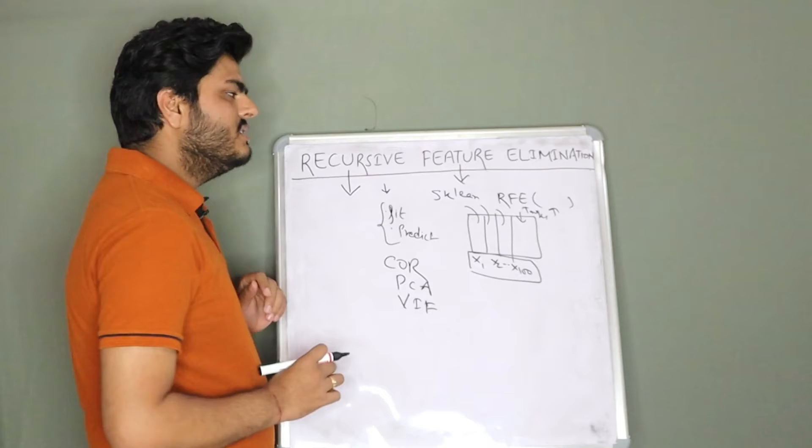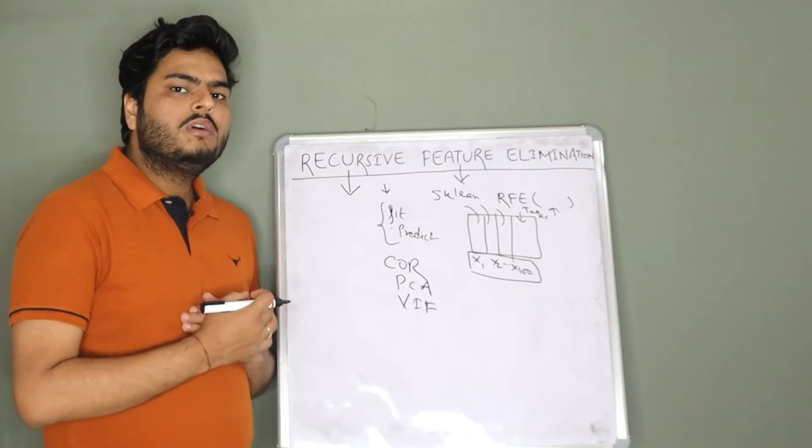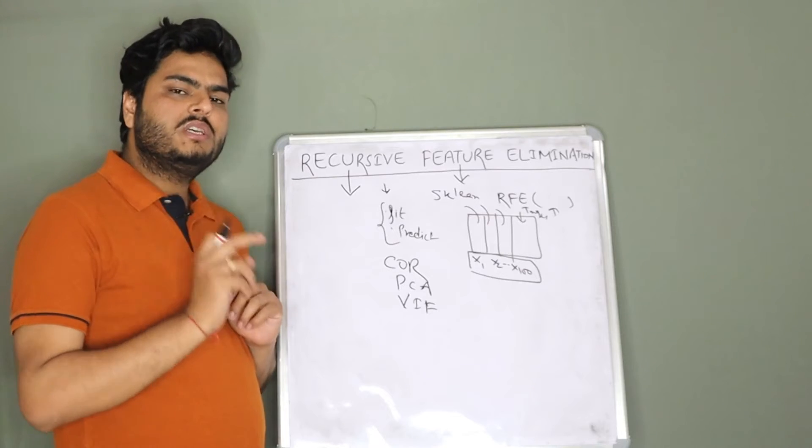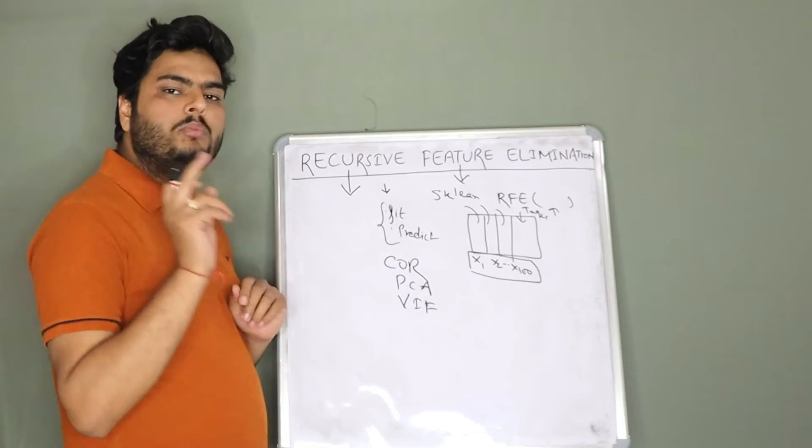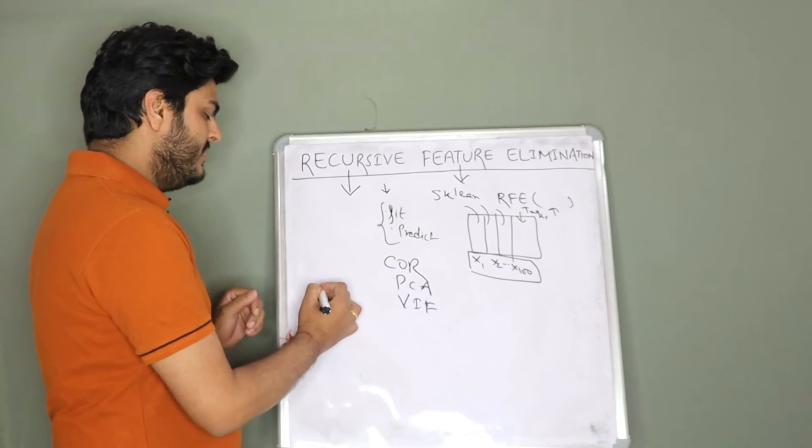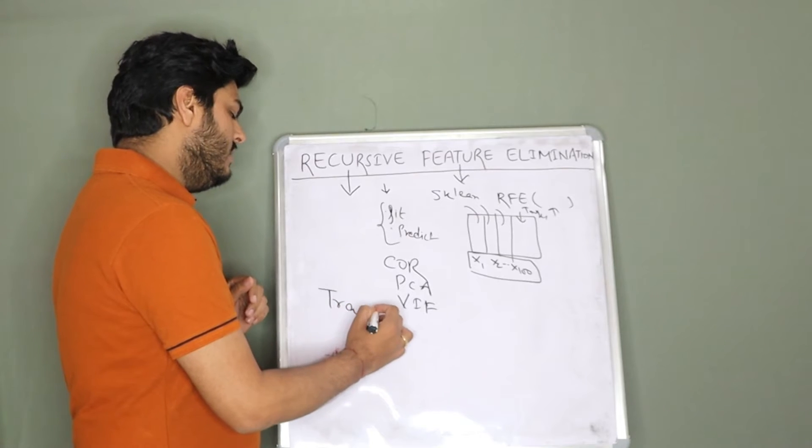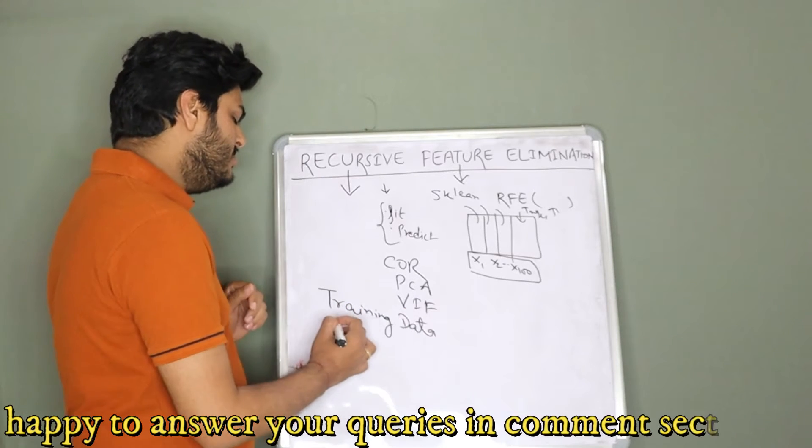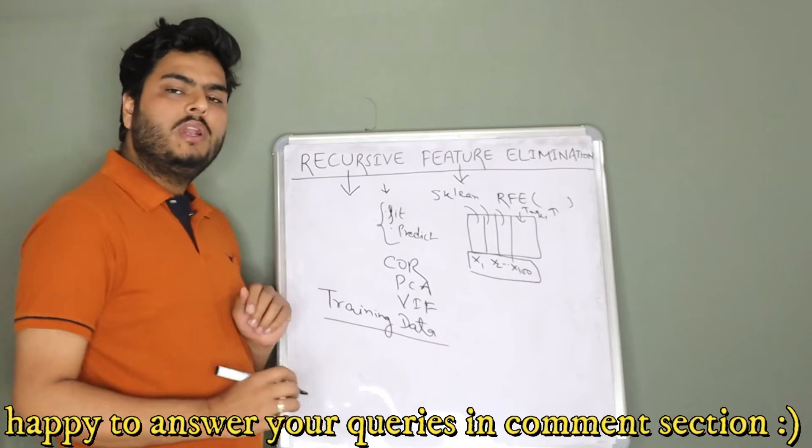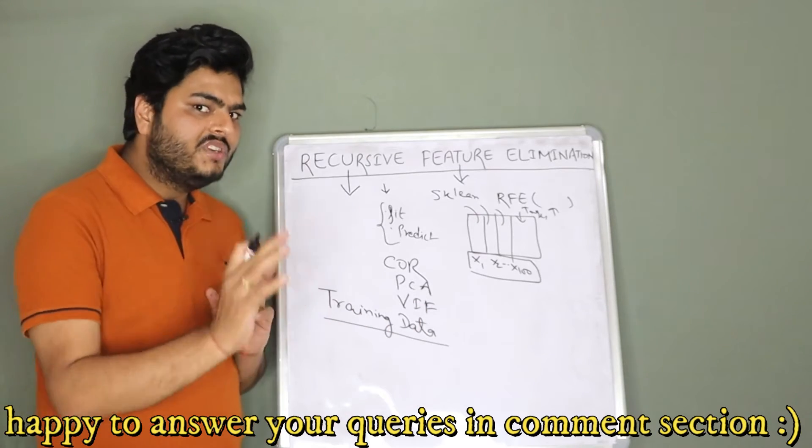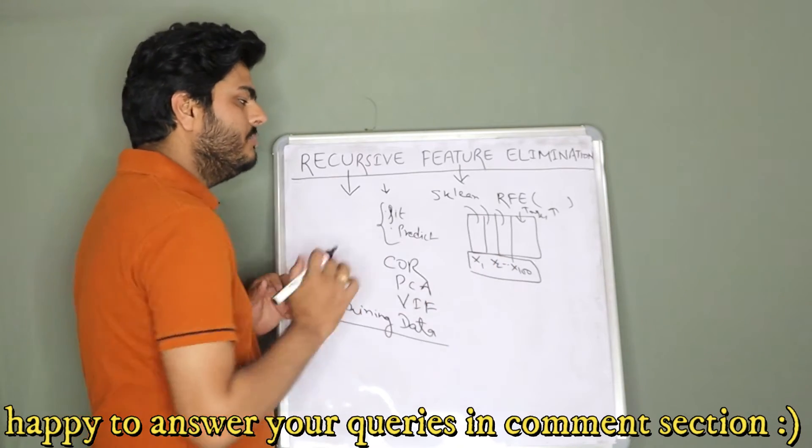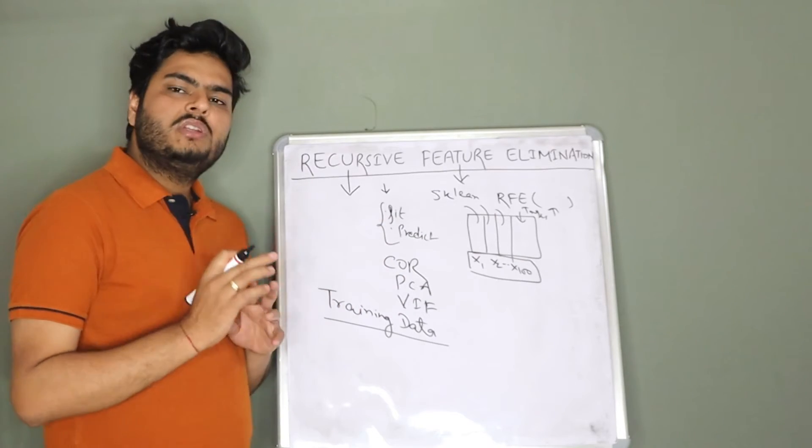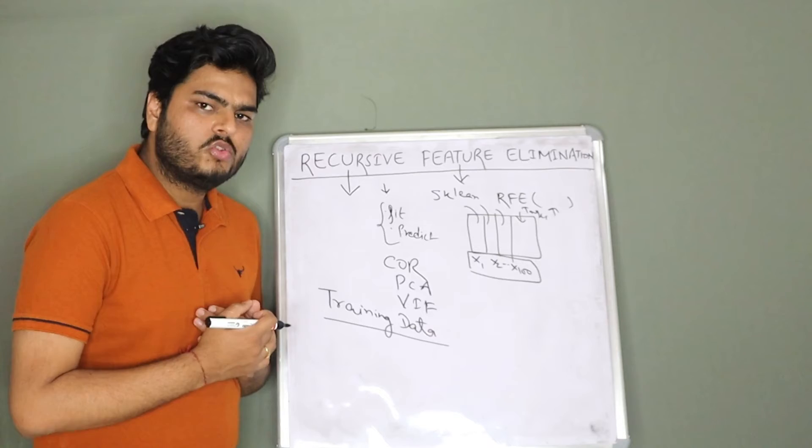RFE or recursive feature elimination will take just two arguments at high level. For example, if there is an input data, there is a training data. This is your model training data. In this training data, you will have a target variable and few features like this. I'll give you this example.